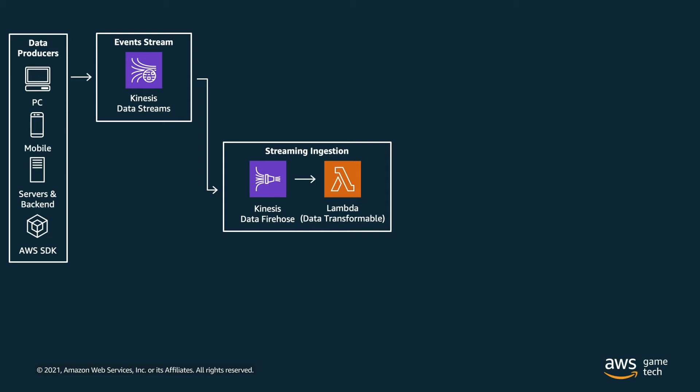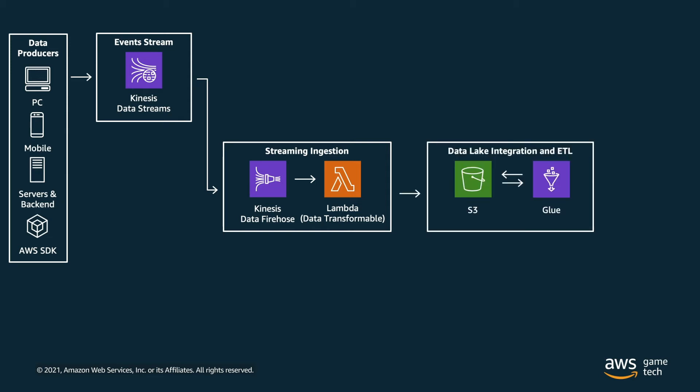Once processed, the data is batched and stored in Amazon S3, our durable object storage in the cloud, which makes for a great data lake. The data is stored in Apache Parquet format, which helps optimize queries for both performance and cost because it's a columnar data format as opposed to row-based formats.